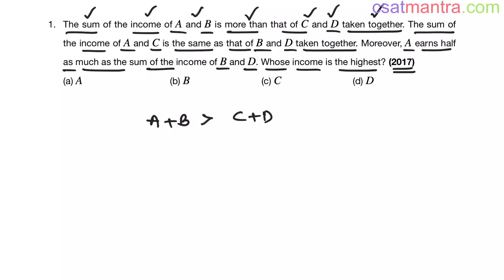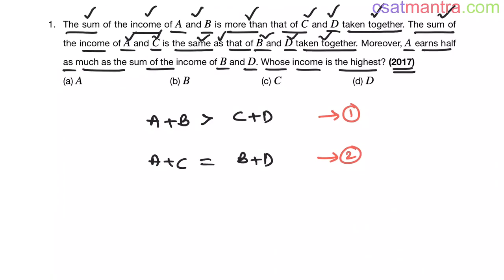Let's mark this as Equation 1. The second statement: the sum of the income of A and C, i.e., A + C, is equal to B and D taken together. Let's mark this as Equation 2. The third statement: A earns half as much as the sum of the incomes of B and D. Let's call this Equation 3.